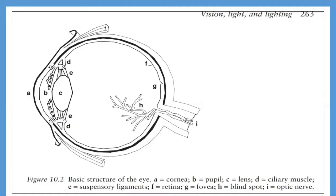In poor light, the iris expands and a large area of the lens is used. Because the peripheral regions of the lens focus the light slightly in front of the image formed by the central part — a characteristic of all simple lenses termed spherical aberration — slight blurring occurs when objects are viewed in poor light. This explains why the ability to discern detail, or visual acuity, is reduced in poor light.